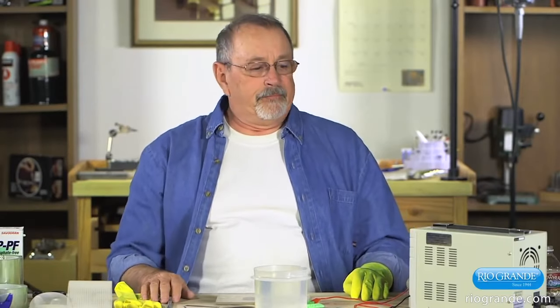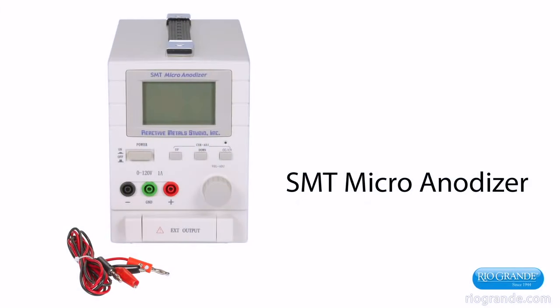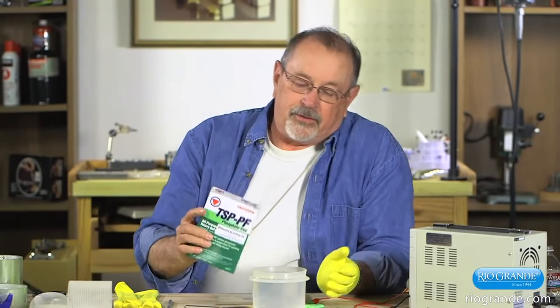Here's what we need. To begin with, we need an anodizing power supply. This is an SMT micro anodizer. We need a bath. This is a bath of water with a low sudsing detergent added to it.